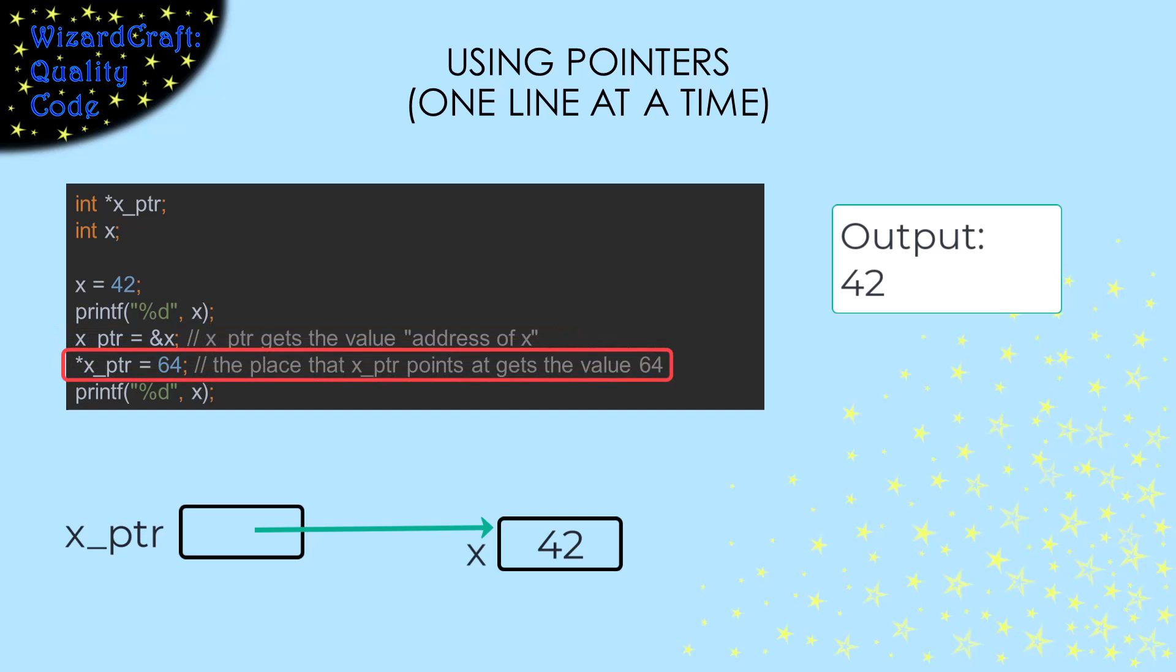We can use x_ptr to store something into x. In this statement, the asterisk means dereference. I call that chase the pointer, which means go to the location that it points at. So this statement will take the 64 and store it at the location x_ptr points at. Now, if I print out x, it prints out 64.